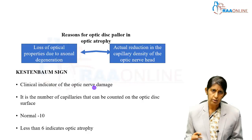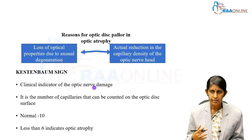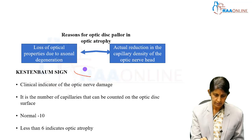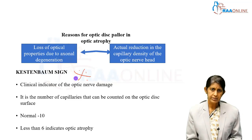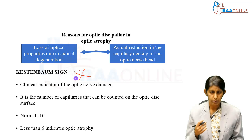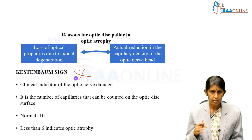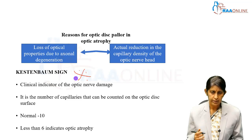The reason for disc pallor is the loss of the ability of axons to cause total internal reflection, and also there is a reduction in capillary density. This leads to another important sign called the Kestenbaum sign, which is a clinical indicator of optic nerve damage. When observing the optic disc, we count the number of capillaries on its surface. The normal number is about 10, and less than 6 usually indicates optic atrophy.